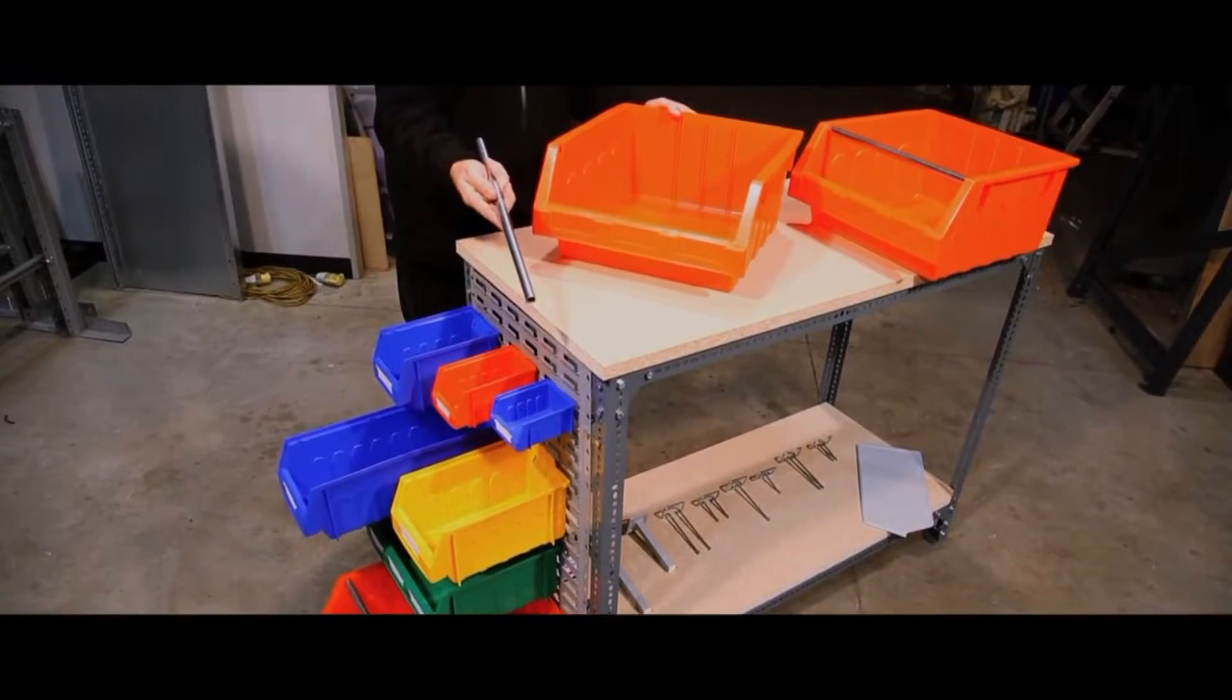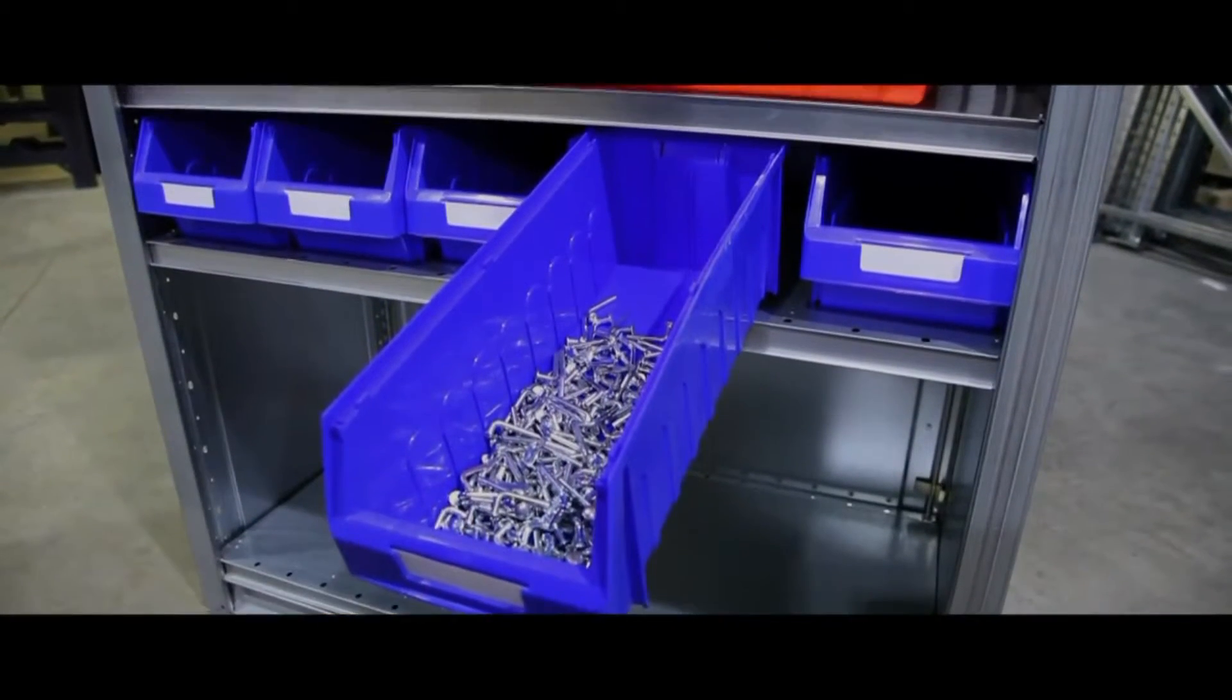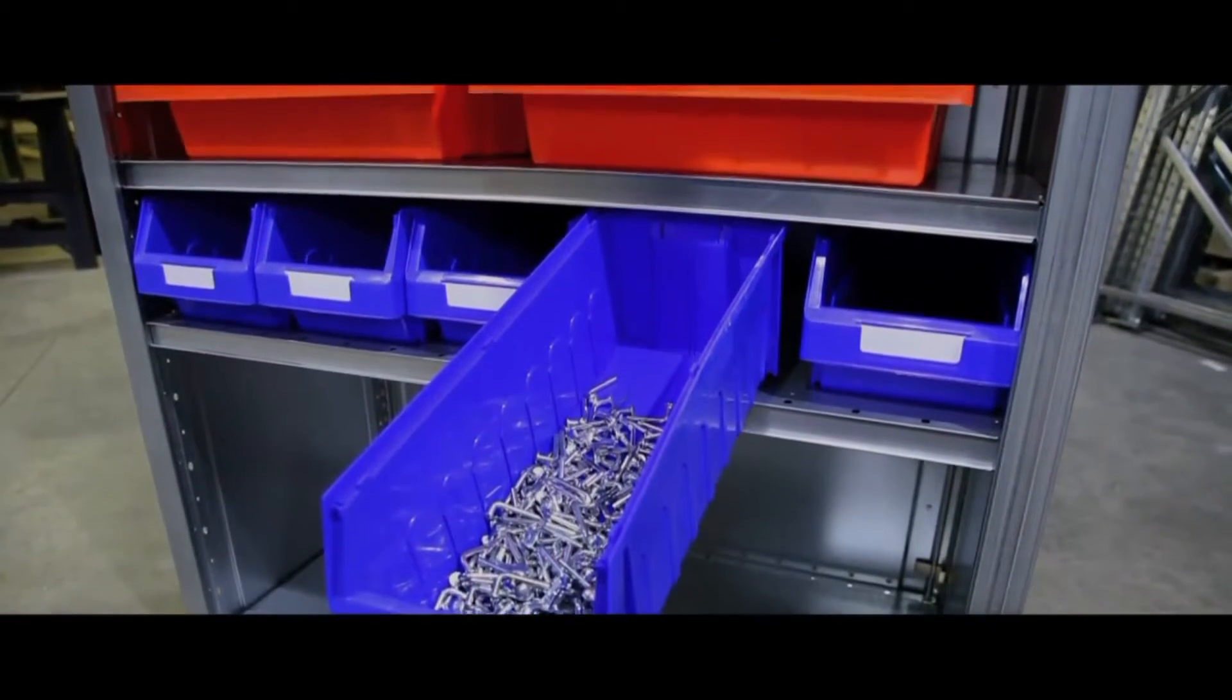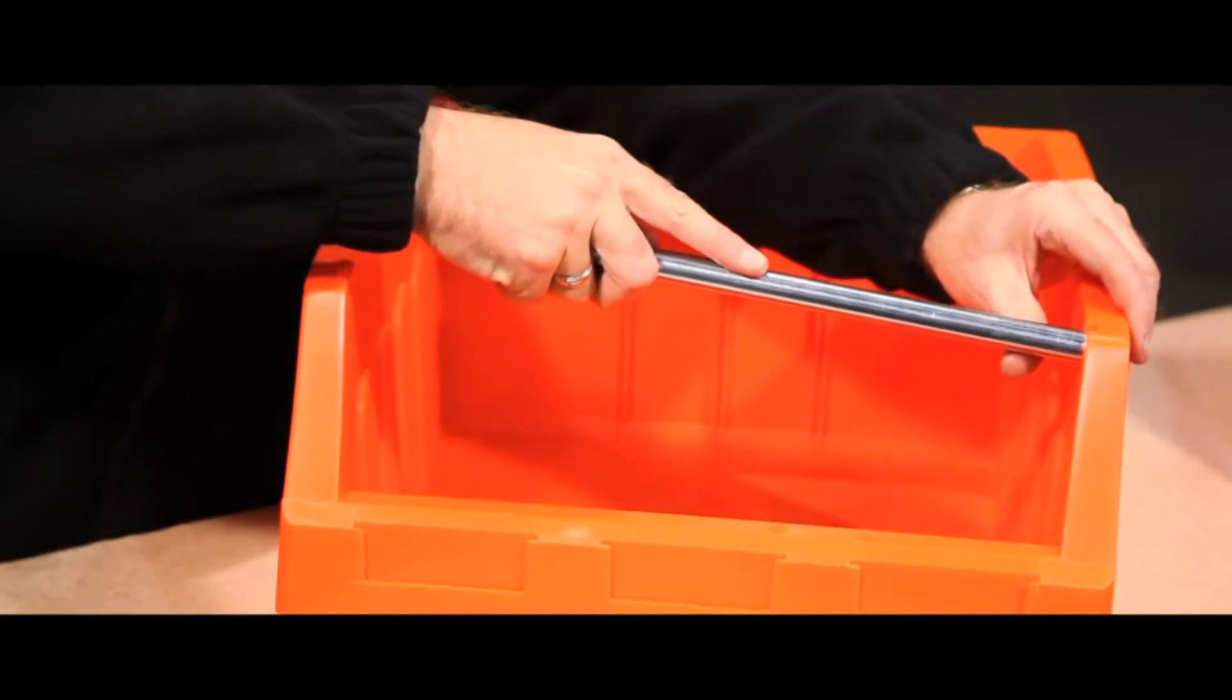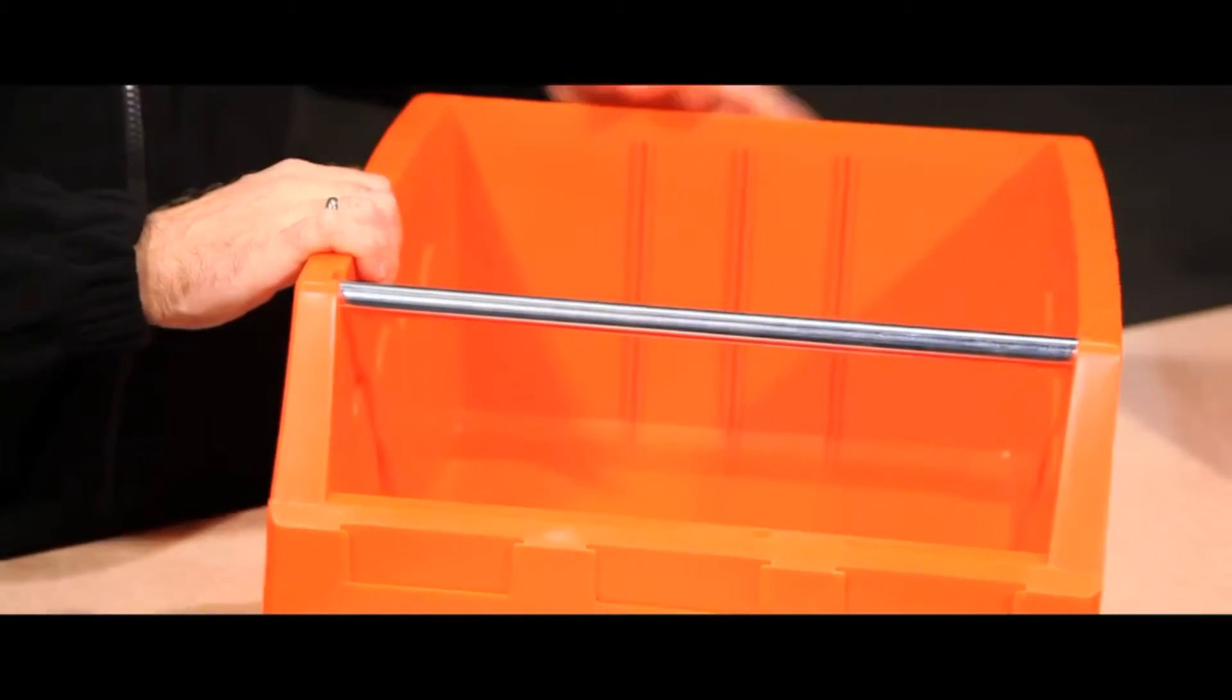They can be used in conjunction with the Dexian Louvered Panel System, on shelves, or stacked together. The largest Dexian Maxi Bin can hold weights of up to 27kg and comes complete with a reinforcement bar.